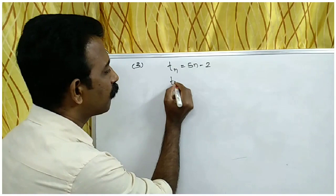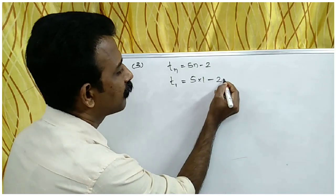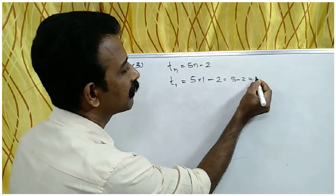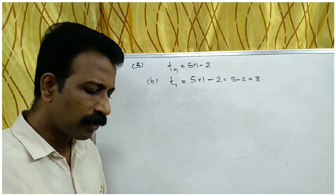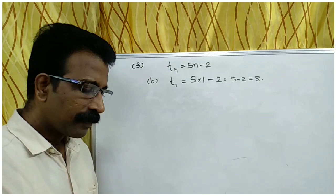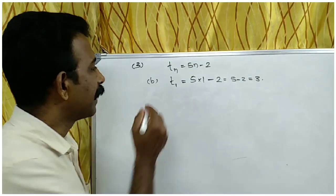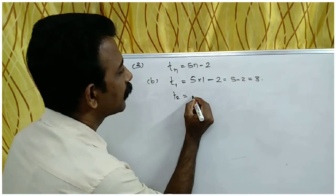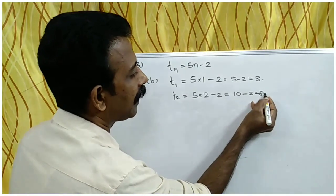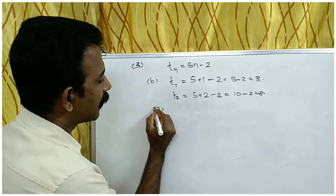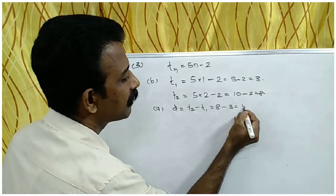To find the first term, substitute N equals 1: 5 times 1 minus 2 equals 3. So the first term is 3 — that is the answer to part B. For the common difference, find the second term: 5 times 2 minus 2 equals 8. Common difference D equals 8 minus 3, which is 5. That is the answer to part A.